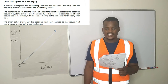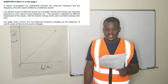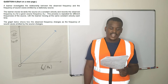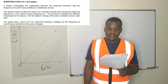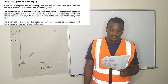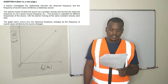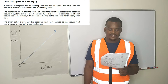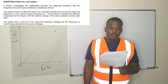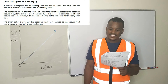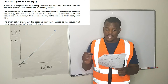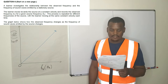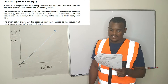A learner investigates the relationship between the observed frequency and the frequency of sound emitted by a stationary source. The learner moves towards the source at a constant velocity and records the observed frequency for a given source frequency. This process is repeated at different frequencies of the source, with the learner moving at the same constant velocity each time. The graph below shows how the observed frequency changes as the frequency of the sound waves emitted by the source changes.